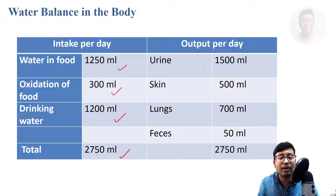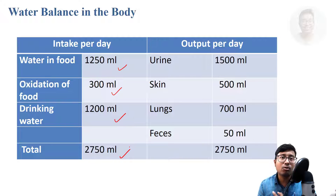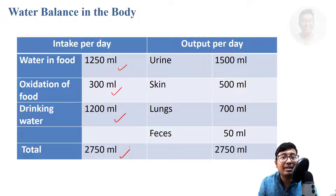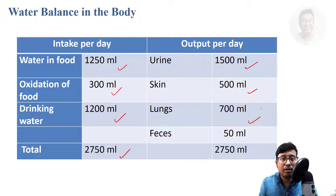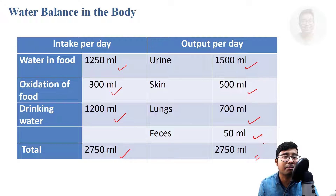Total intake is 2,750 ml, and intake should be equal to output. If intake is more than output, the body will swell up; if intake is less than output, you will be dehydrated. The output sources are: urine 1.5 litres, insensible perspiration and sweating both 500 ml, lungs 700 ml of water vapour expired out, and faeces 50 ml — totalling 2,750 ml. Total intake and output is balanced.